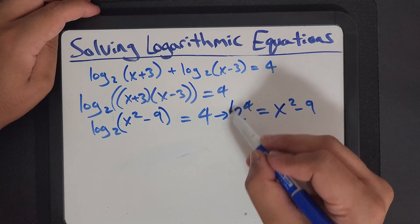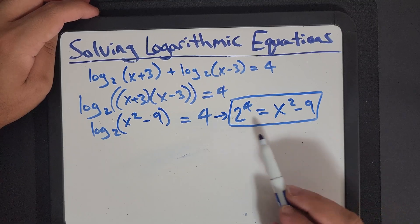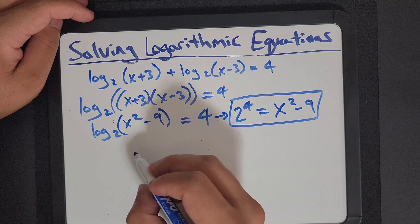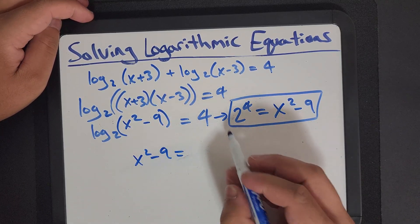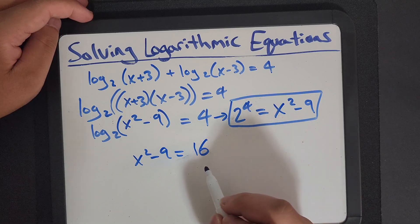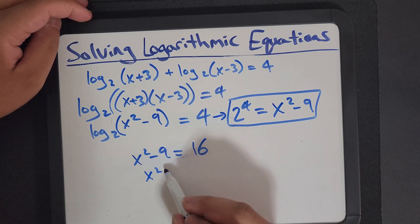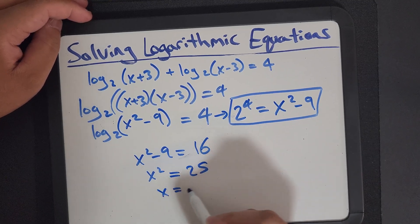So now I am here. I want to solve that, but that looks like it's just simple math. 2 to the 4 is, so x squared minus 9 is equal to 2 to the 4, which is 16. x squared, so I bring the 9 over, I'm at 25, x is equal.